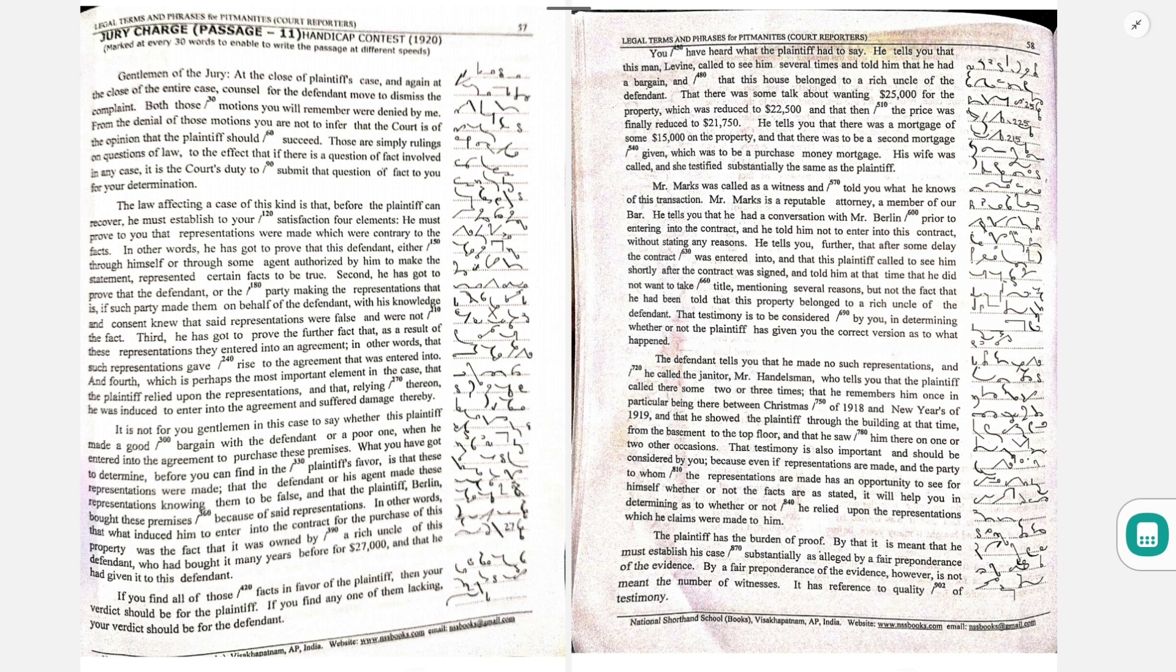There was to be a second mortgage given, which was to be a purchase money mortgage. His wife was called and she testified substantially the same as the plaintiff.